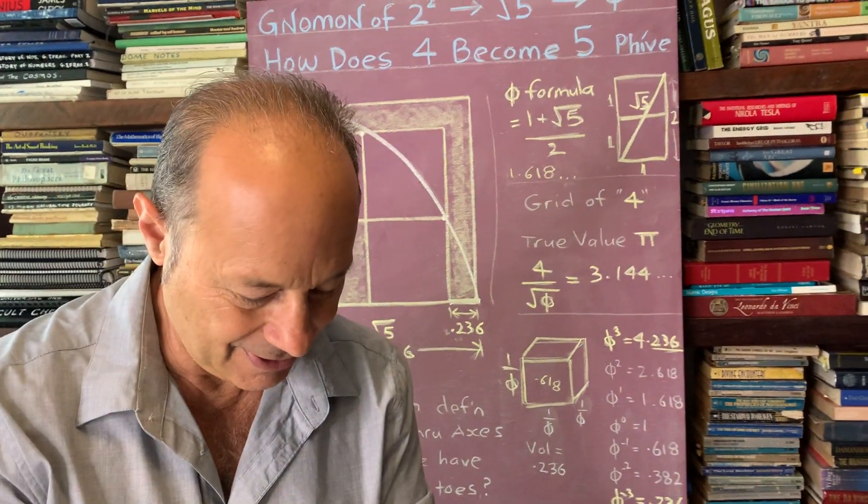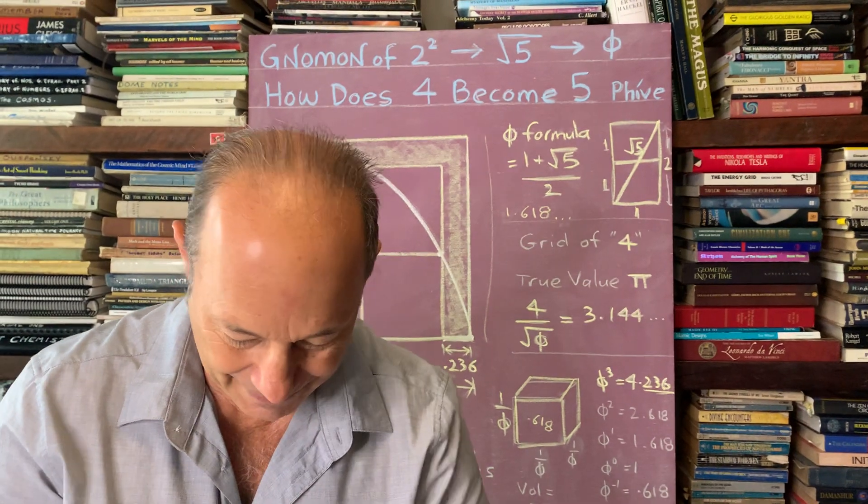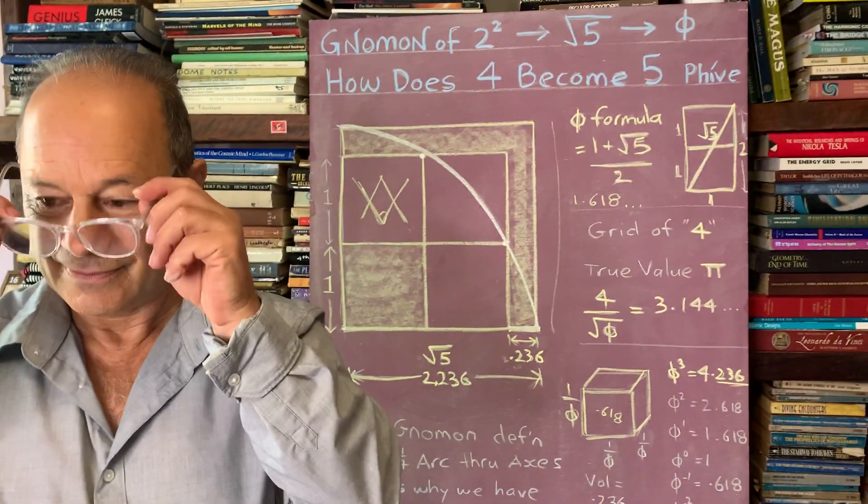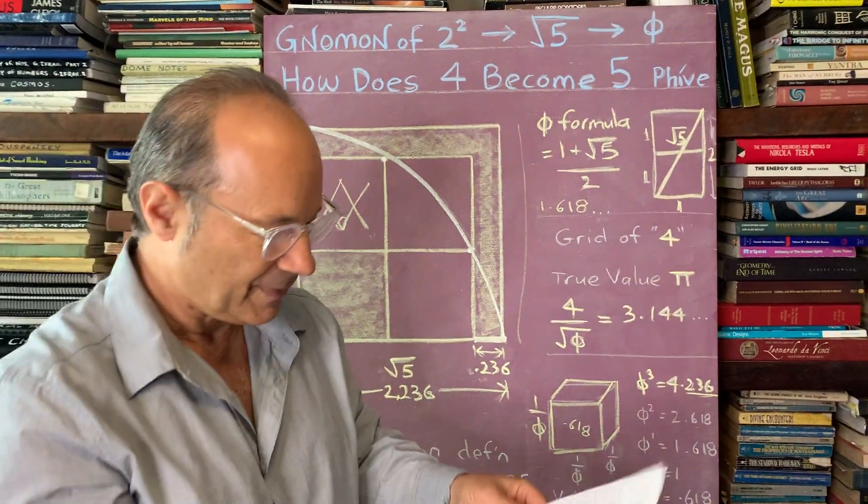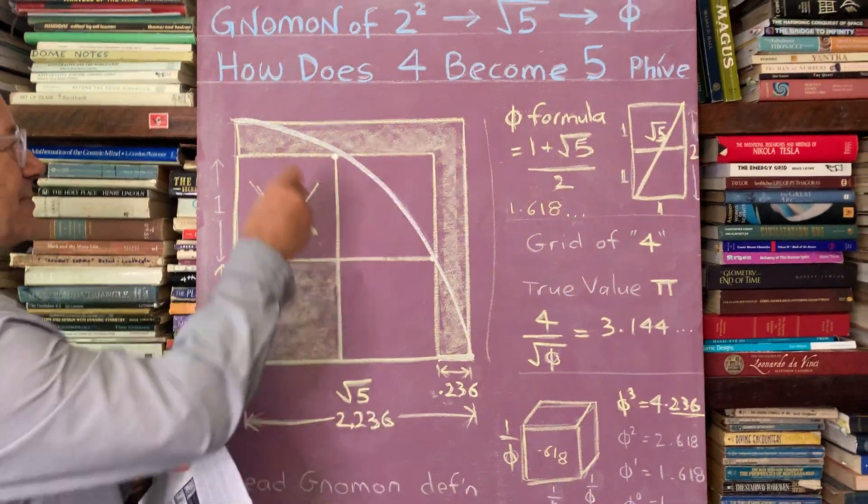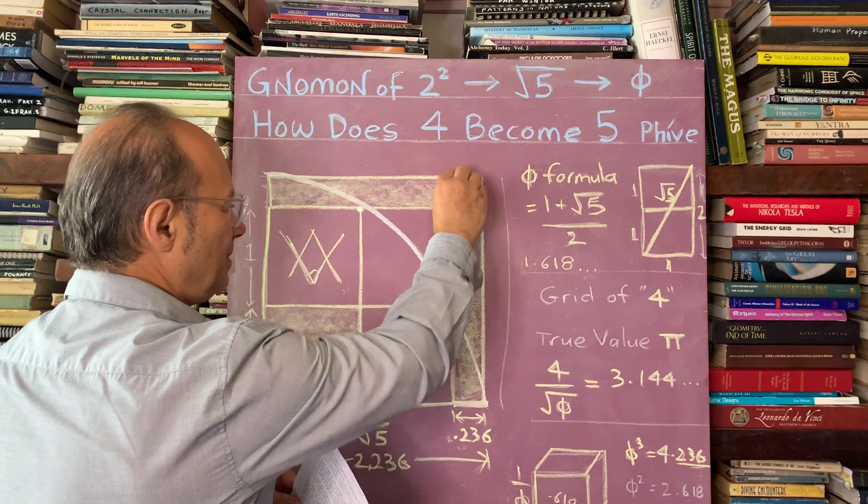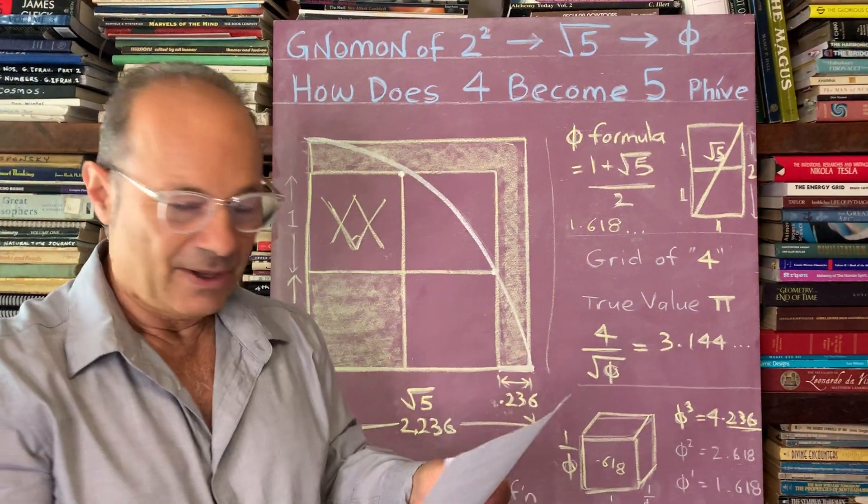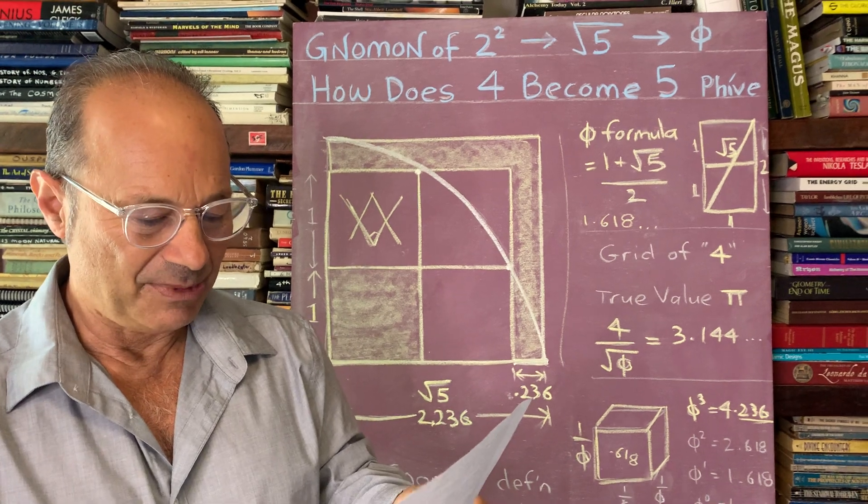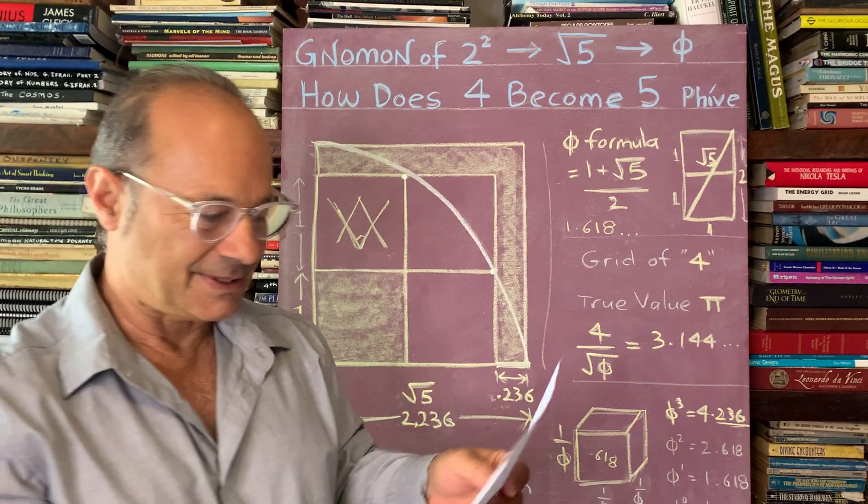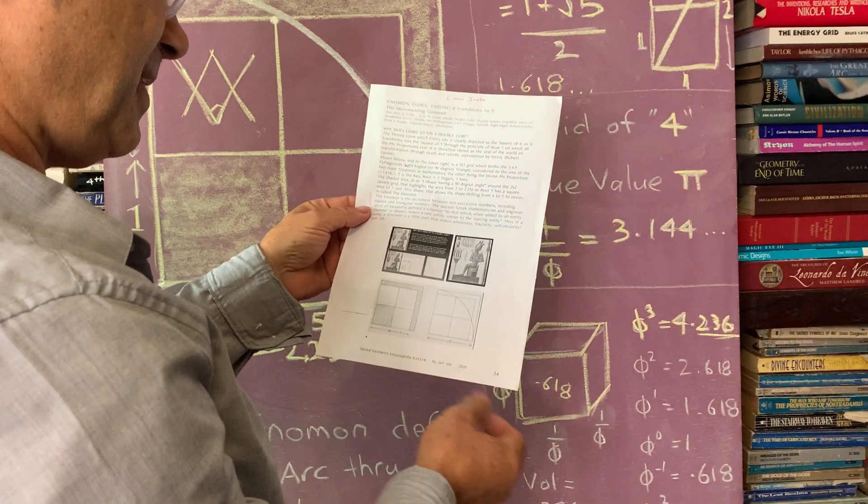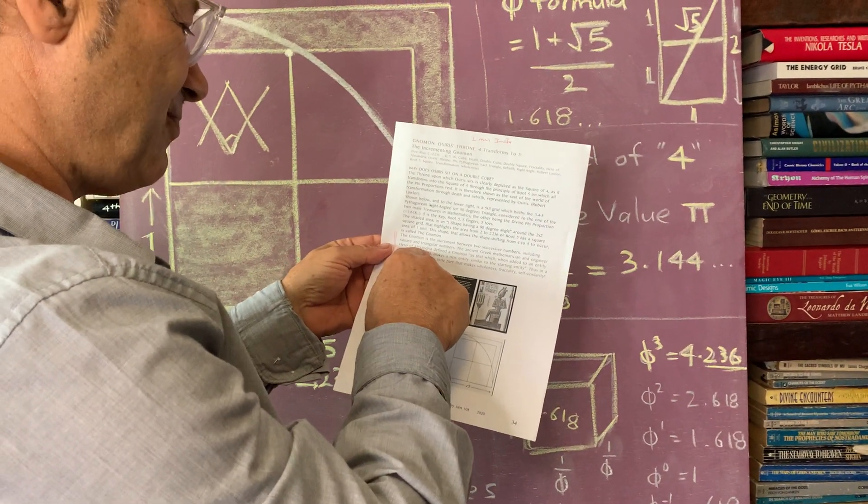I'd just like to conclude with a quote. To understand why this was all based on what we call the gnomon, this L-shaped here, the gnomon is the increment between two successive numbers, including square and triangular numbers. The ancient Greek mathematician and engineer, Hero of Alexandria, defined a gnomon as that which,